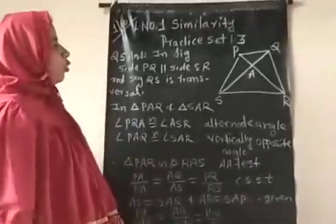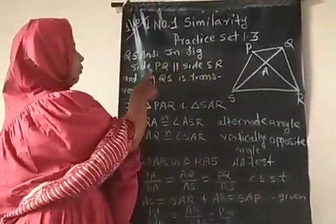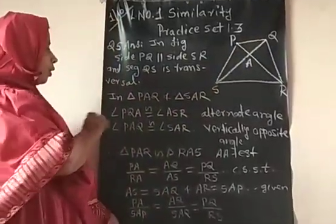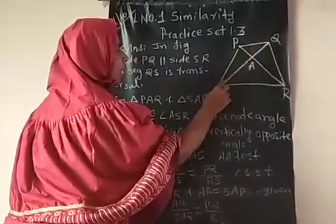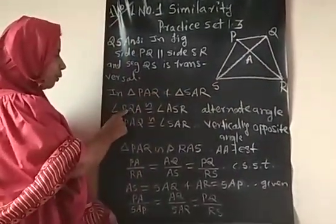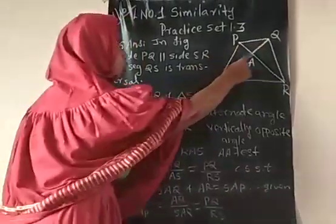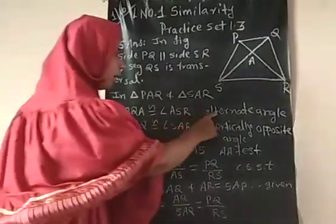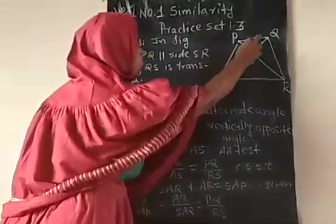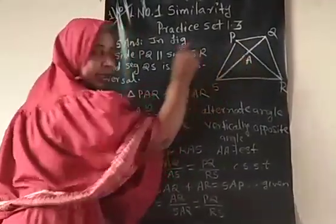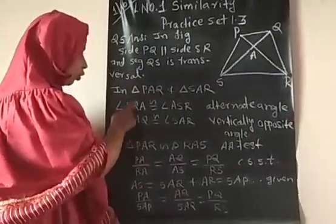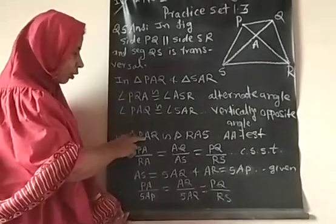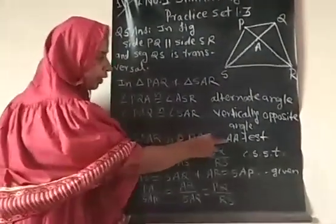Question number 5: quadrilateral PQRS is a given trapezium. In this trapezium, side PQ is parallel to side SR as given in the question, and QS is our transversal. Now we consider two triangles PAQ and SAR. In these two triangles, angle PQA is congruent to angle ASR because they form an alternate pair — the reason being alternate angles. Angle PAQ is congruent to angle SAR because they are vertically opposite angles.